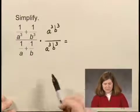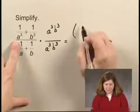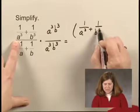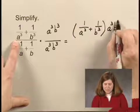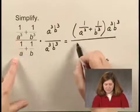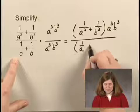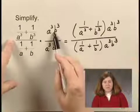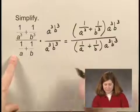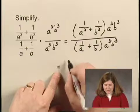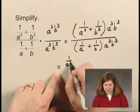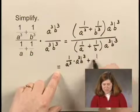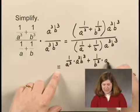Using the distributive property on the next step, I have 1 over a-cubed plus 1 over b-cubed, times a-cubed b-cubed, all over 1 over a plus 1 over b times a-cubed b-cubed — multiplying numerators and multiplying denominators. Now I can use the distributive property and write the numerator as 1 over a-cubed times a-cubed b-cubed, plus 1 over b-cubed times a-cubed b-cubed.